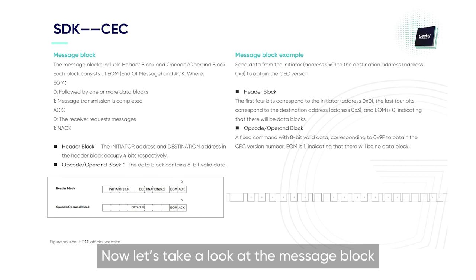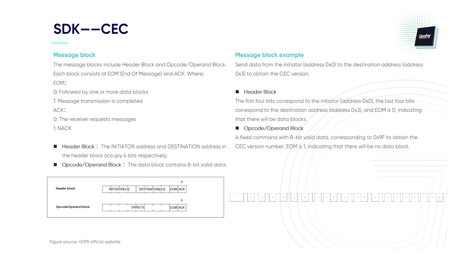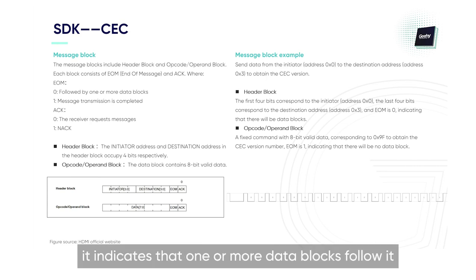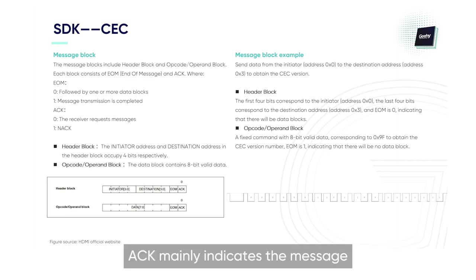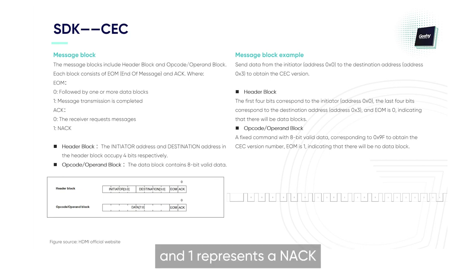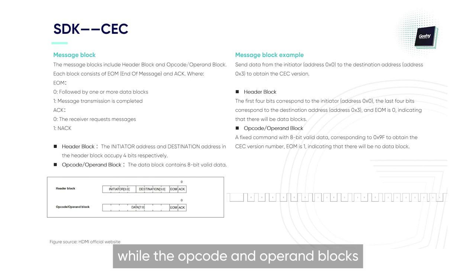Now let's take a look at the message block. It includes the header block and the opcode/operand block. Each type of block contains an EOM and an ACK. If EOM is 0, it indicates that one or more data blocks follow it; 1 indicates that the transmission has been completed. ACK mainly indicates the message that the receiver is requesting, and 1 represents a NACK. The initiator address and target address in the header block each occupy 4 bits, while the opcode and operand blocks contain 8 bits of valid data.